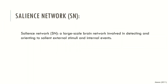The salience network is a large-scale brain network involved in detecting and orienting to salient external stimuli and internal events. When we have some physiological or psychological need, this network orients our attention to the stimuli that we have coded in memory, where we can satisfy our need.